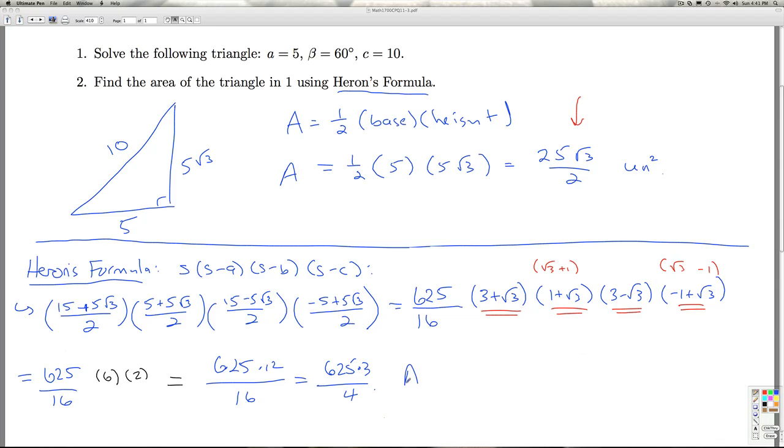So, according to Heron's formula, the area then is the square root of this whole thing. Which is the square root of 625 times 3 over 4. The 625 comes out as a 25. The 4 comes out as a 2. But I'm stuck with square root of 3. And once again, it's an area. It's a unit squared. And that checks with what we've got using the basic formula for geometry.